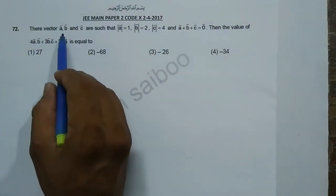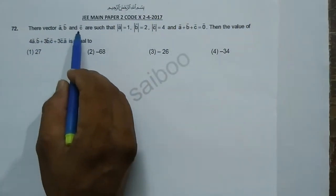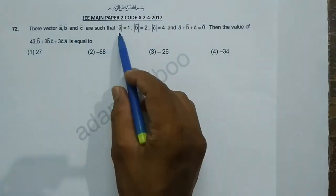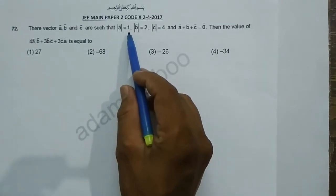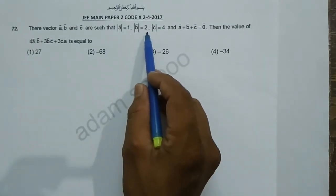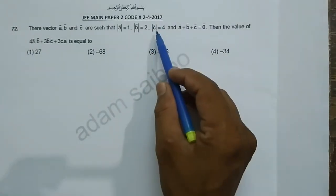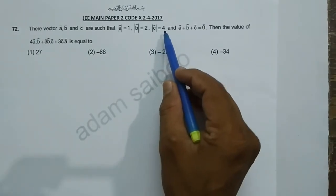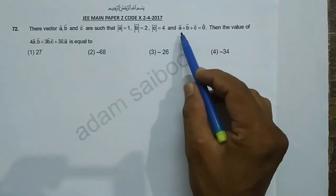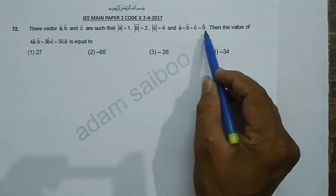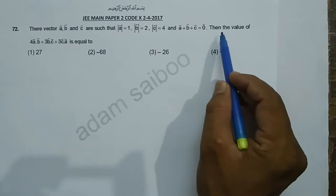Three vectors A, B, and C are such that modulus of A vector is equal to 1, modulus of B vector is equal to 2, modulus of C vector is equal to 4, and A plus B plus C vector is equal to zero vector.